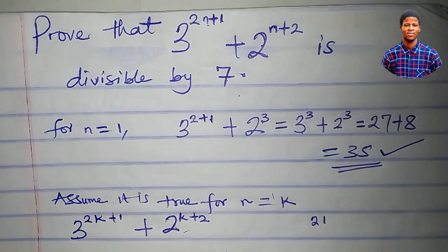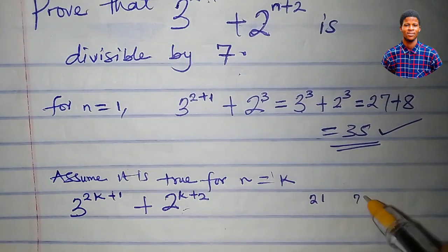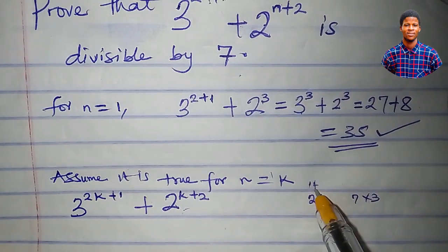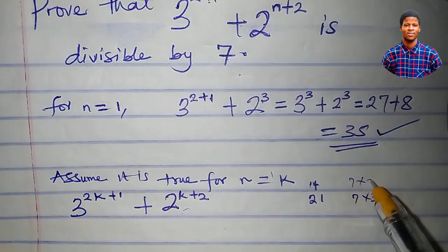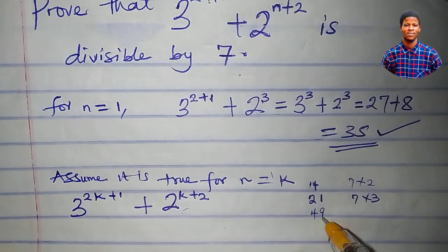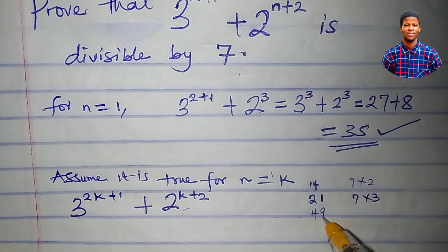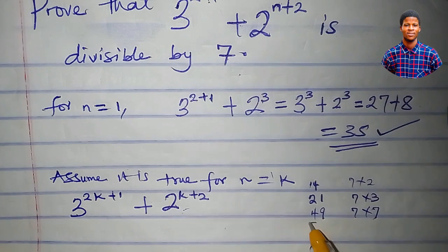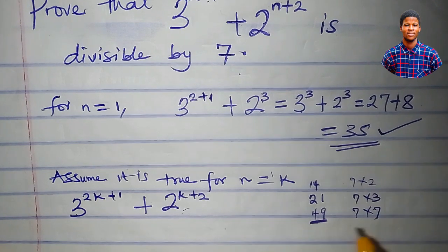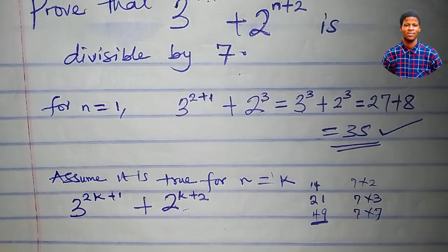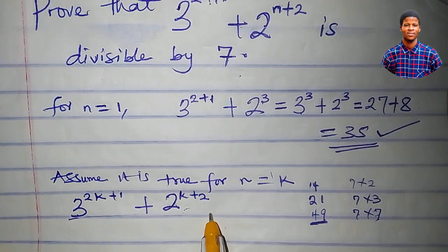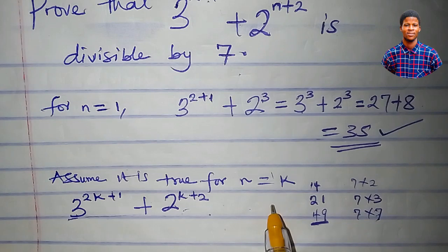Now, 21 is divisible by 7, and 21 is 7 times 3. 14 is divisible by 7, and 14 is 7 times 2. 49 is also divisible by 7, and 49 is 7 times 7. That means a number that is divisible by 7 is equal to 7 times another integer — that is the key point. So since this expression is divisible by 7, it equals 7 times some positive integer.